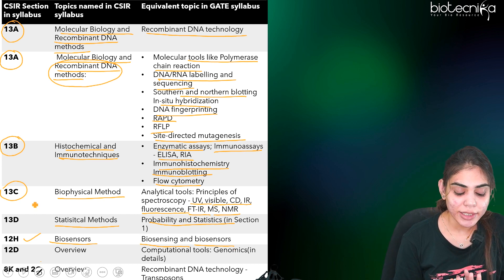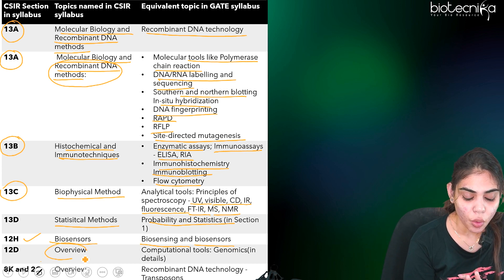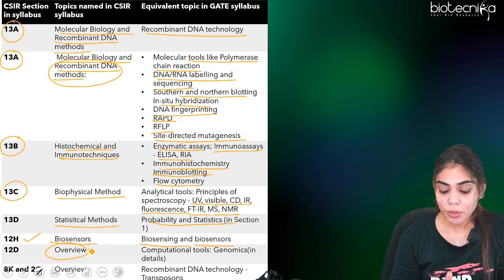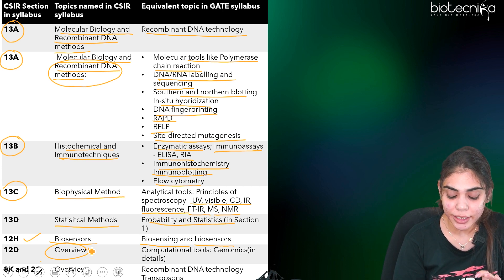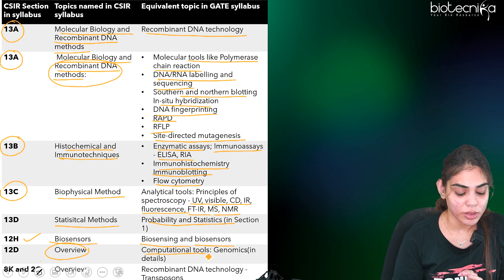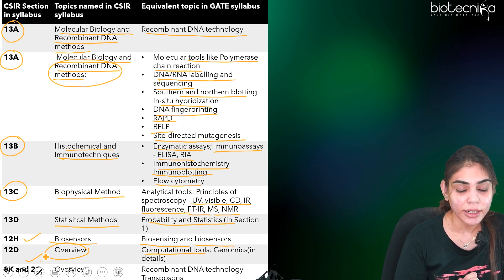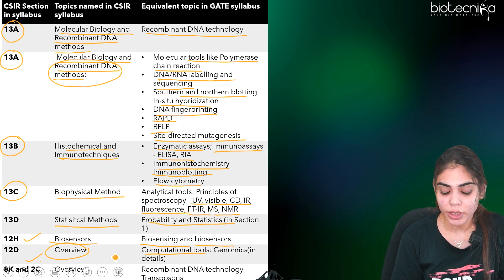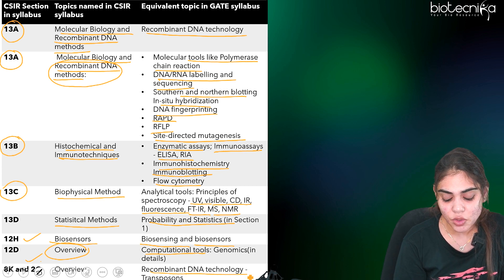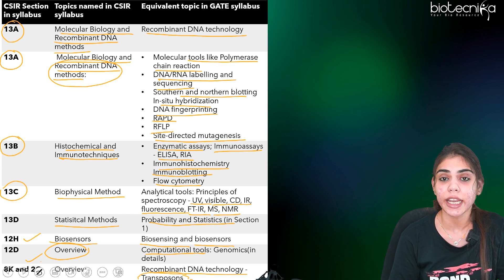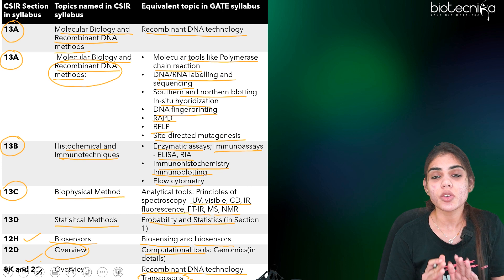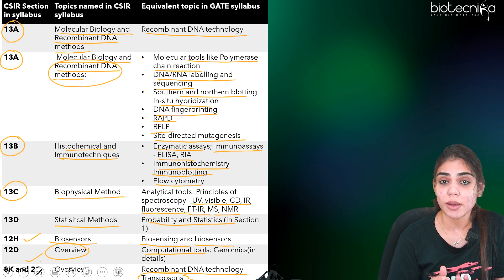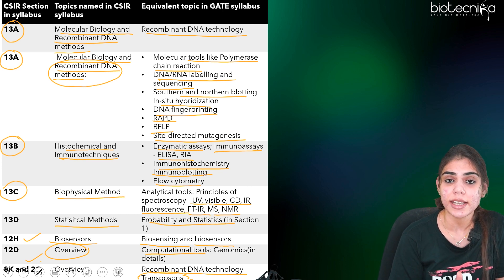The 13D part on statistical methods under CSIR is equivalent to probability and statistics in GATE. The 12H part on biosensors is equivalent to biosensing and biosensors in GATE Biotechnology. For the 12D section, CSIR covers genomics and bioinformatics only as an overview, but you have to learn these in detail for GATE. Also, 8K and 2C parts are overview in CSIR, whereas GATE requires learning RDT mechanisms as well as transposons in detail.